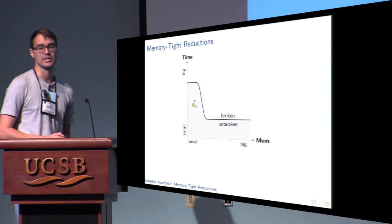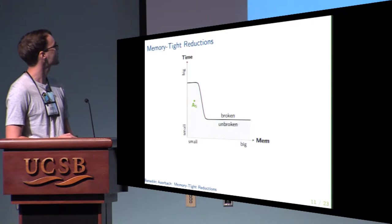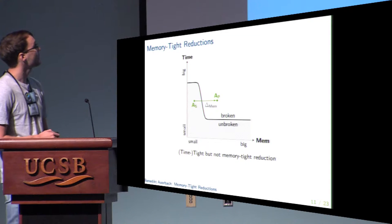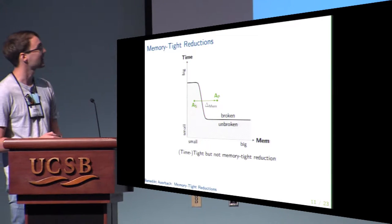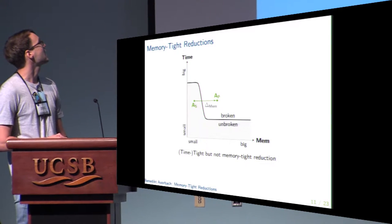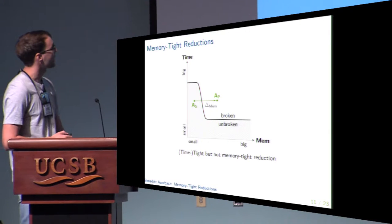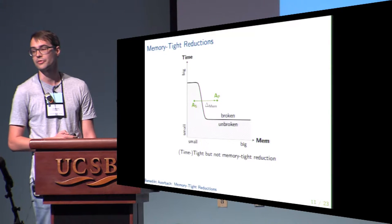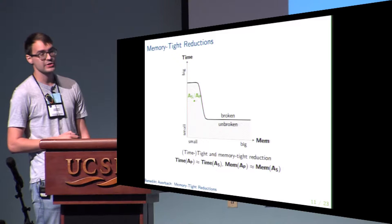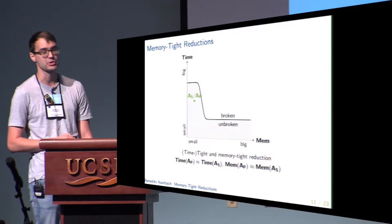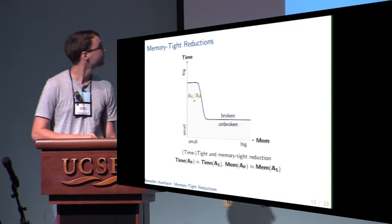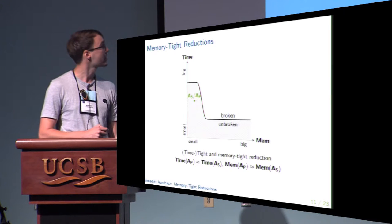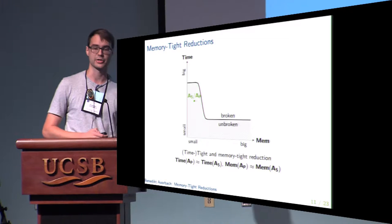Suppose we constructed some scheme S and want to show it is secure against all adversaries satisfying some time and memory constraints. Even if our reduction is tight — meaning it preserves essentially the running time — it might still not be memory tight and could have a much higher memory consumption. We would end up with an algorithm in the area for which LPN is known to be broken. However, if the reduction is also memory tight, meaning its memory consumption is essentially the same as the underlying adversary's, we can construct an algorithm outperforming even the best currently known algorithms in solving LPN, and we gain trust in the security of our scheme.